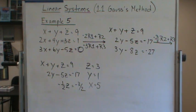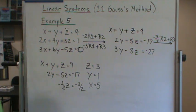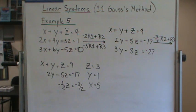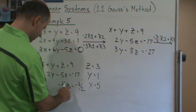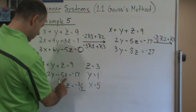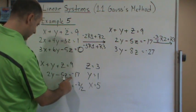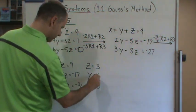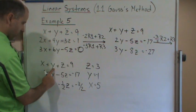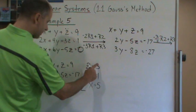Hold on — I think I made a mistake. Let me recheck. With z equals 3 and y equals negative 1: substituting back, this should be negative 1, which means y equals negative 1 is correct. Let me redo x: that gives x equals 7.